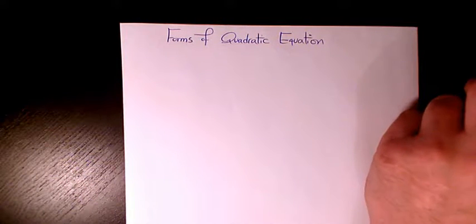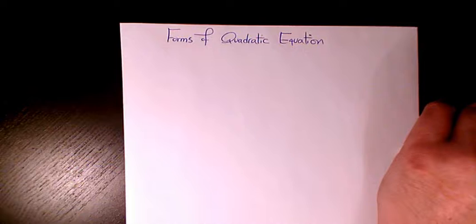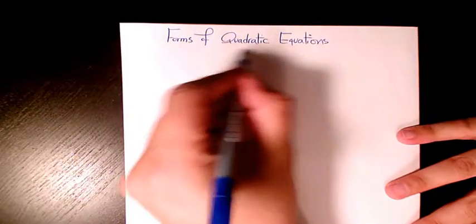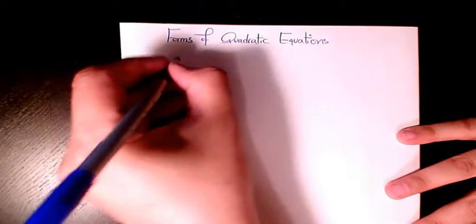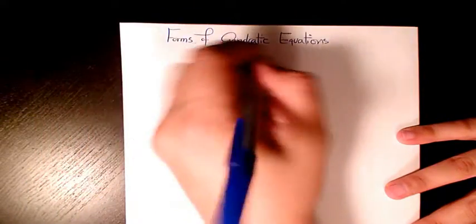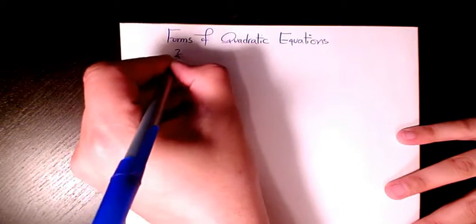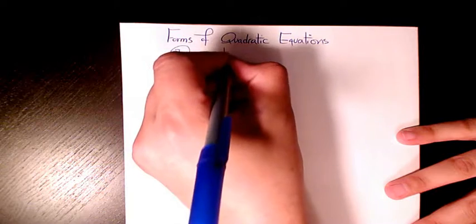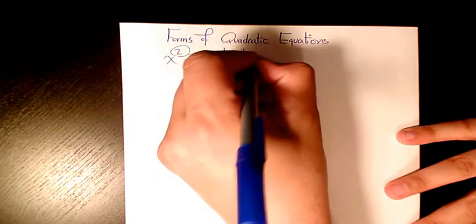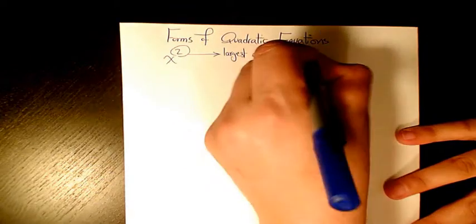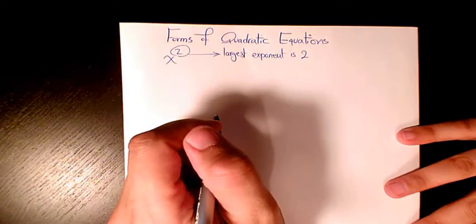What's up guys, this is Mass here, welcome to my channel. In this video I want to show you different forms of quadratic equations. First of all, I need to mention what quadratic means. Quadratic equations are polynomials that have exponent 2, so the largest exponent is 2. These are called quadratics.